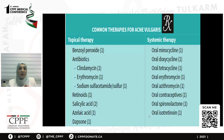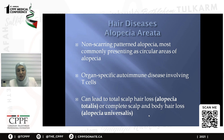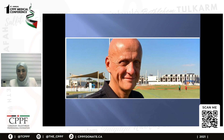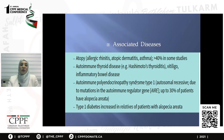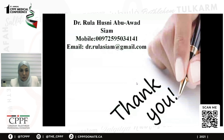Alopecia areata is a non-scarring autoimmune form of hair loss characterized by areas of bald scalp. It may progress to alopecia totalis (total scalp hair loss) or alopecia universalis (entire body hair loss). Exclamation point hairs indicate active disease. It may be associated with atopy or autoimmune thyroid disease. Treatment depends on severity: mild cases use topical or intralesional corticosteroids; rapidly progressive cases may require systemic corticosteroids. I am happy to answer any questions, and my contact information is available for follow-up.